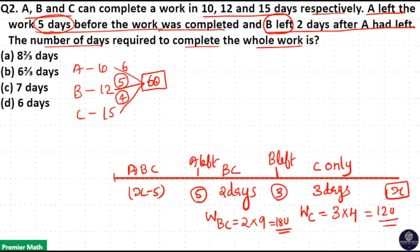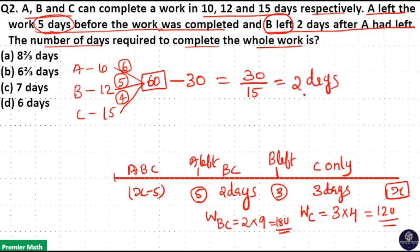Total work completed in the last phases: B and C in 2 days plus C in 3 days is 18 + 12 = 30 units. So remaining work is 60 − 30 = 30 units. This 30-unit work was completed by A, B and C together. Their combined efficiency is 6 + 5 + 4 = 15. So 30 ÷ 15 = 2 days. A, B and C worked together for 2 days.